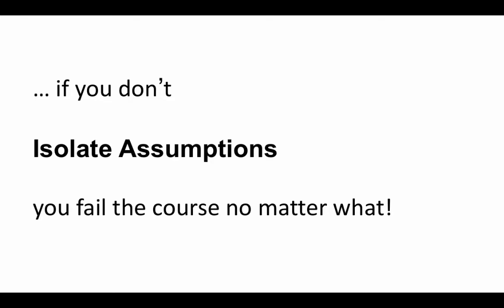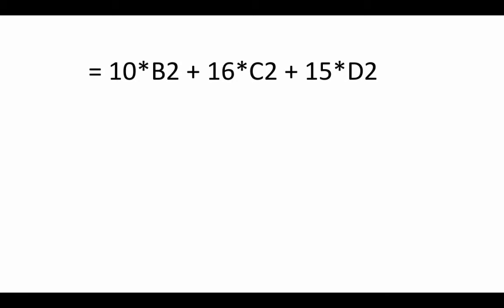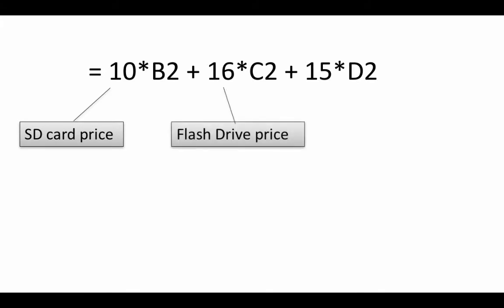Let's try and understand what we mean by isolating assumptions and why it's so important. So consider this formula. This is a formula we wrote to calculate the total cost for each of the people in the last video, in the video on absolute addresses. Here of course the number 10 represents the price of an SD card, 16 is the price of a flash drive and 15 is the price of a stylus. This is the formula that we wrote first and of course we saw why this formula was not good.